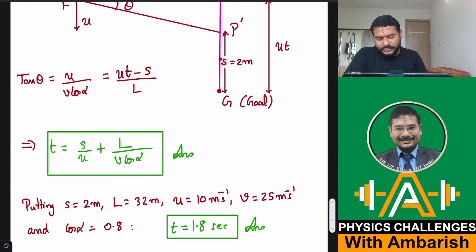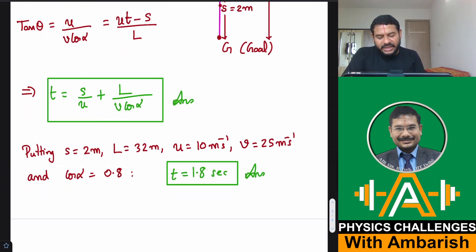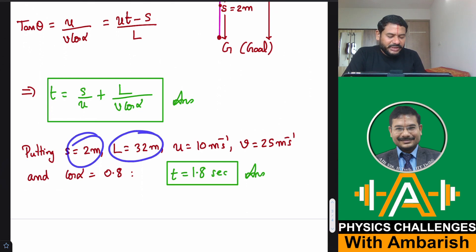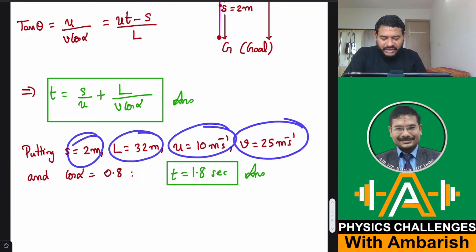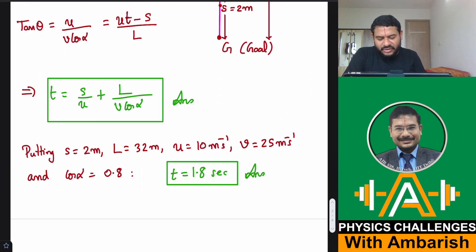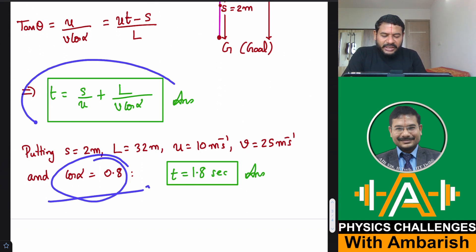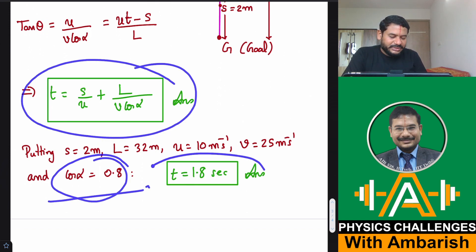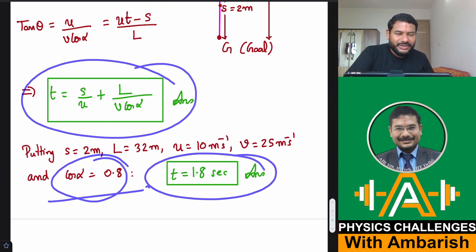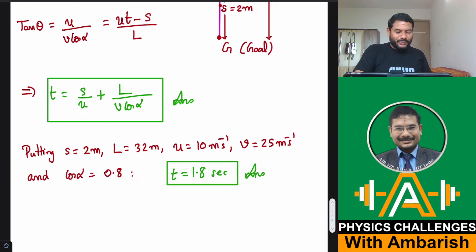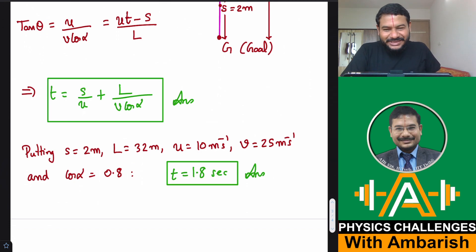Substituting the values: s = 2 m, l = 32 m, u = 10 m/s, v = 25 m/s, and cos α = 0.8. Putting in all the values, the time t = 1.8 seconds.